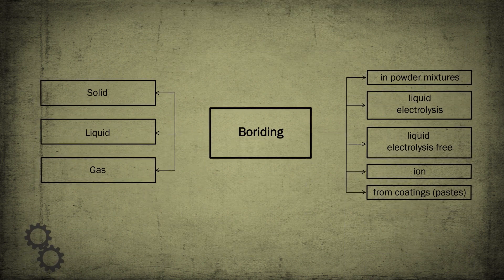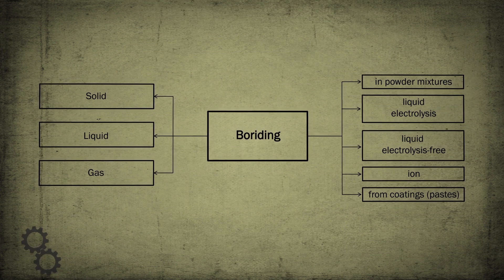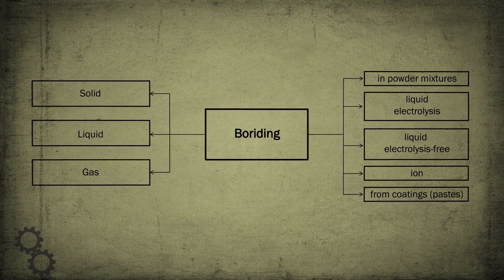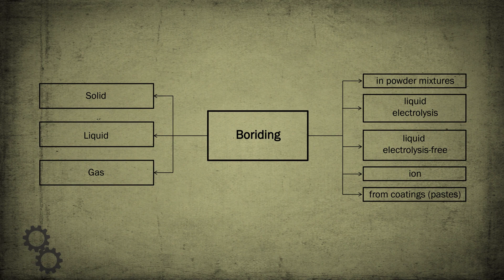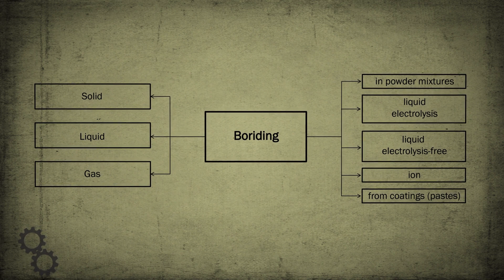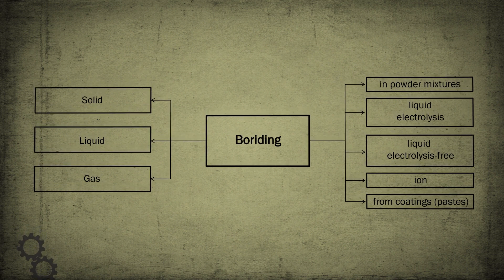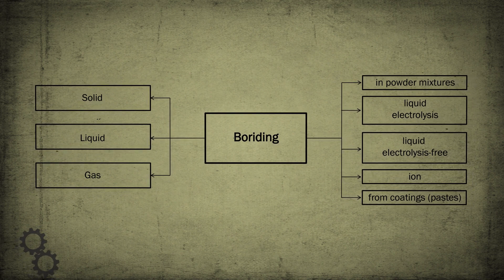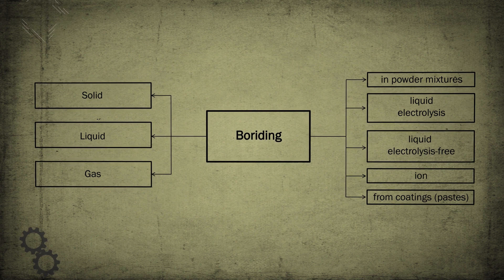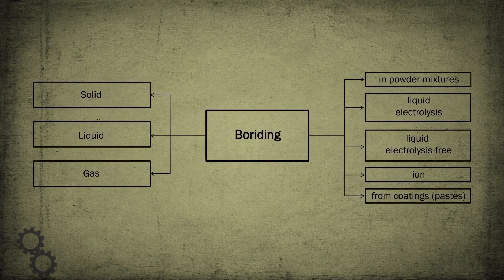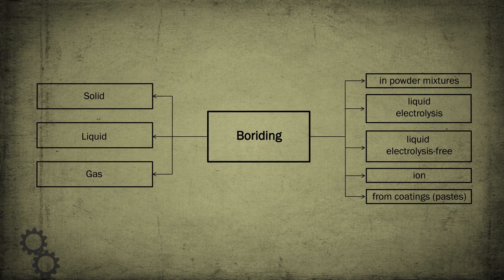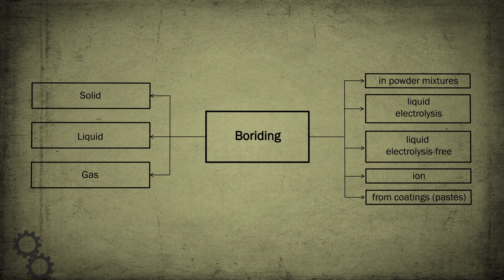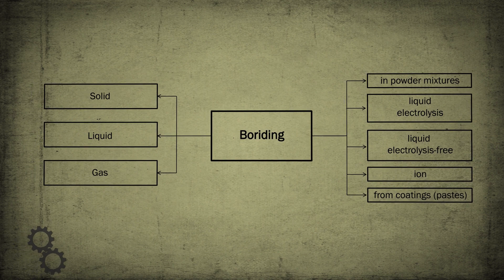There are three main buridine methods: in solid, liquid, and gaseous media. Industrial application includes buridine in powder mixtures, electrolysis buridine, liquid electrolysis-free buridine, iron buridine, and buridine from coatings and pastes.